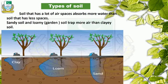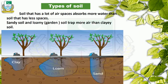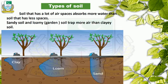Now we have to check whether different types of soil have different amounts of air. Soil that has a lot of air spaces absorbs more water. Loamy and sandy soil both have more air spaces than clay soil, which is why they absorb more water than clay soil.